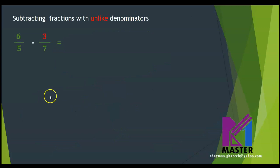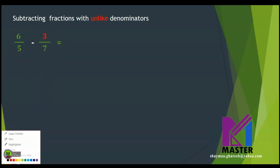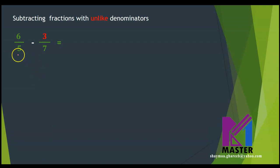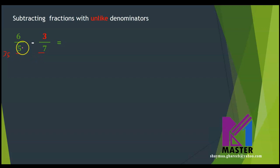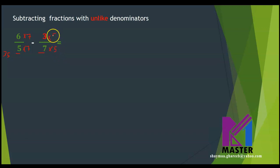Let's see an example. If I have 6 over 5 minus 3 over 7, I need to change the denominators to be the same first. I need to think of a common multiple between 5 and 7 — it's better to choose the least common multiple, which is 35. So I will change the 5 and the 7 into 35: the 5 becomes 35 by multiplying by 7 up and down, and the 7 becomes 35 by multiplying by 5 up and down.